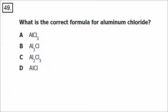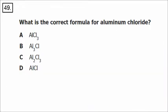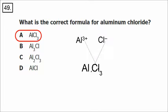Number 49: this is an ionic compound involving a metal and a nonmetal. Aluminum has a charge of plus three and chloride has a charge of minus one. Using the crisscross rule, we get AlCl3. The correct answer is A.